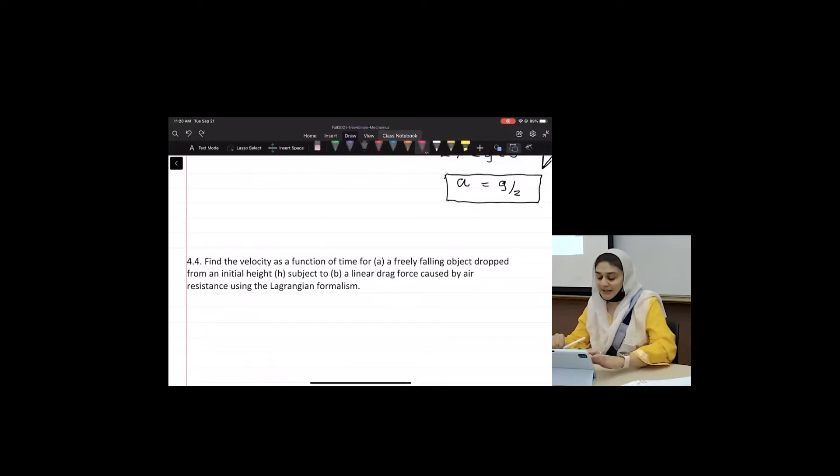A freely falling object subject to a linear drag caused by air resistance. And when I say a linear drag, what does that mean? Drag is a function of BV, or drag is proportional to x dot. Actually, let's call it y dot, then everybody will not get confused.